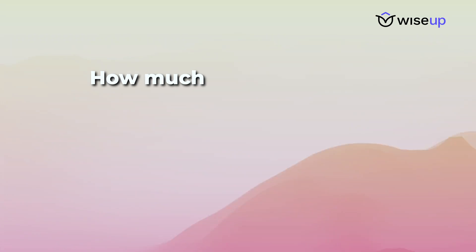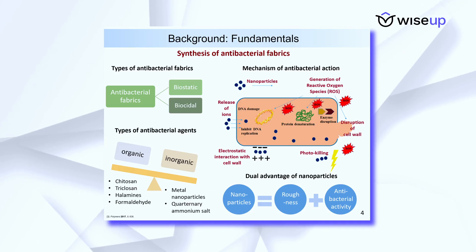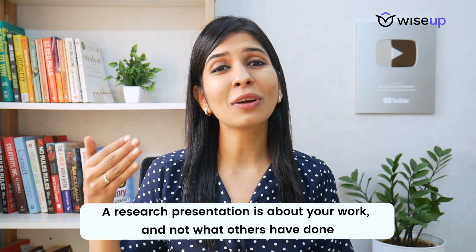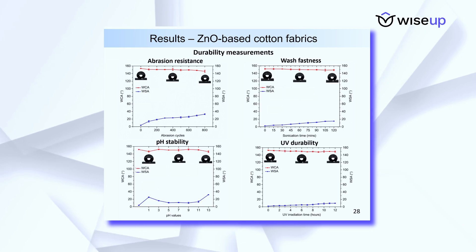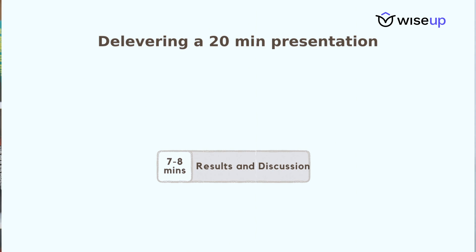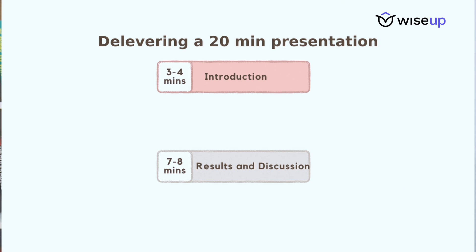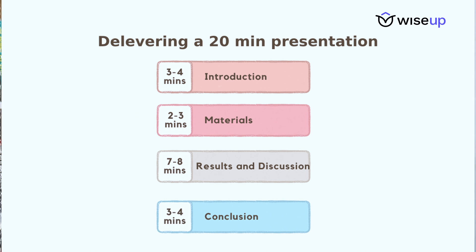The next thing you need to understand is how much time you should be spending on each section, and this is where I've seen the majority of people making a mistake. In general, people spend the maximum amount of time on the literature review or the introduction section. But a research presentation is about you and what you have done, rather than focusing on what others have achieved. So maximum focus should be on the results and discussion section. For a 20-minute presentation: seven to eight minutes on results and discussion, three to four minutes on the introduction, two to three minutes on materials and methods, and another three to four minutes on conclusion, summary, and future scope.